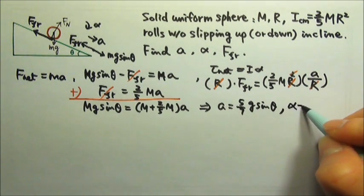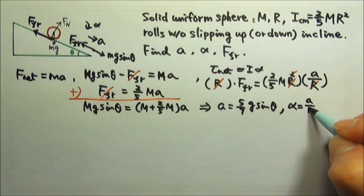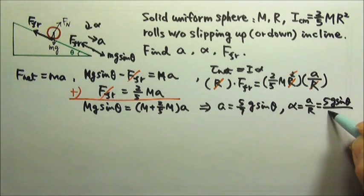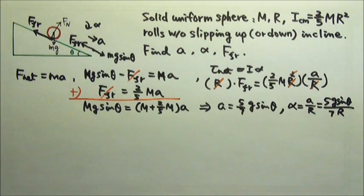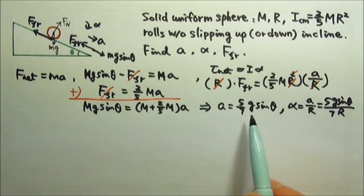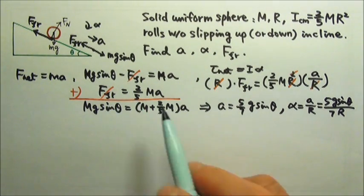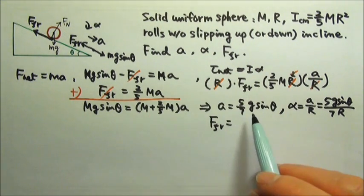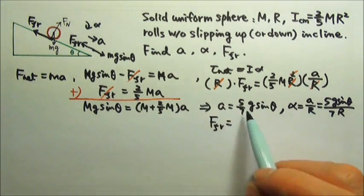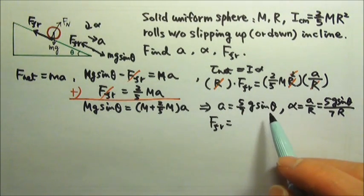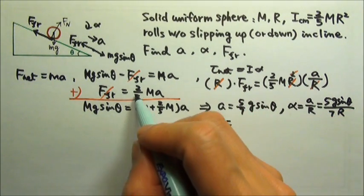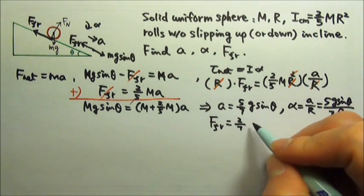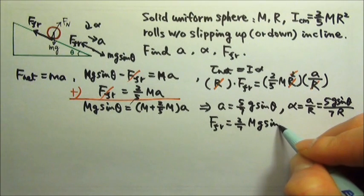And what is alpha? Alpha is a over r, so it's going to be 5 g sine theta over 7 r. To find the friction, we just have to plug the a into here, so friction would equal to 2 fifths times m times 5 sevenths g sine theta. The 5 and the 1 fifths cancel, so I'm going to get 2 sevenths m g sine theta.